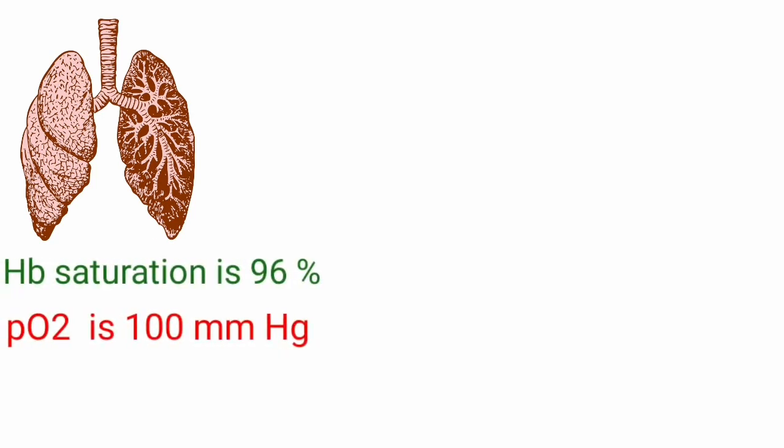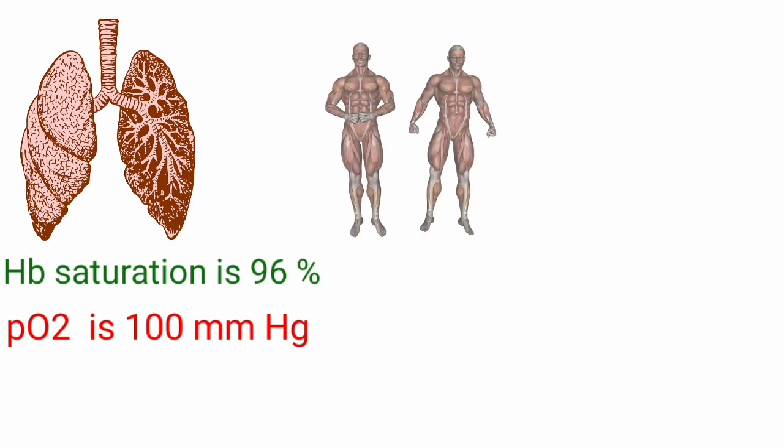Hemoglobin is 96% saturated in lungs where the partial pressure of oxygen is 100 millimeters of mercury. In resting muscle with a partial pressure of 40 millimeters of mercury, hemoglobin is only 64% saturated.